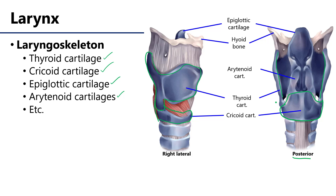The epiglottic cartilage, seen here in lateral profile, is a little more obvious when viewed from the posterior. It has a stem and leaf-like appearance to it. The arytenoid cartilages sit atop the cricoid cartilage; they're more cone or funnel shaped. These are going to be very important cartilages with respect to the functions of the larynx.